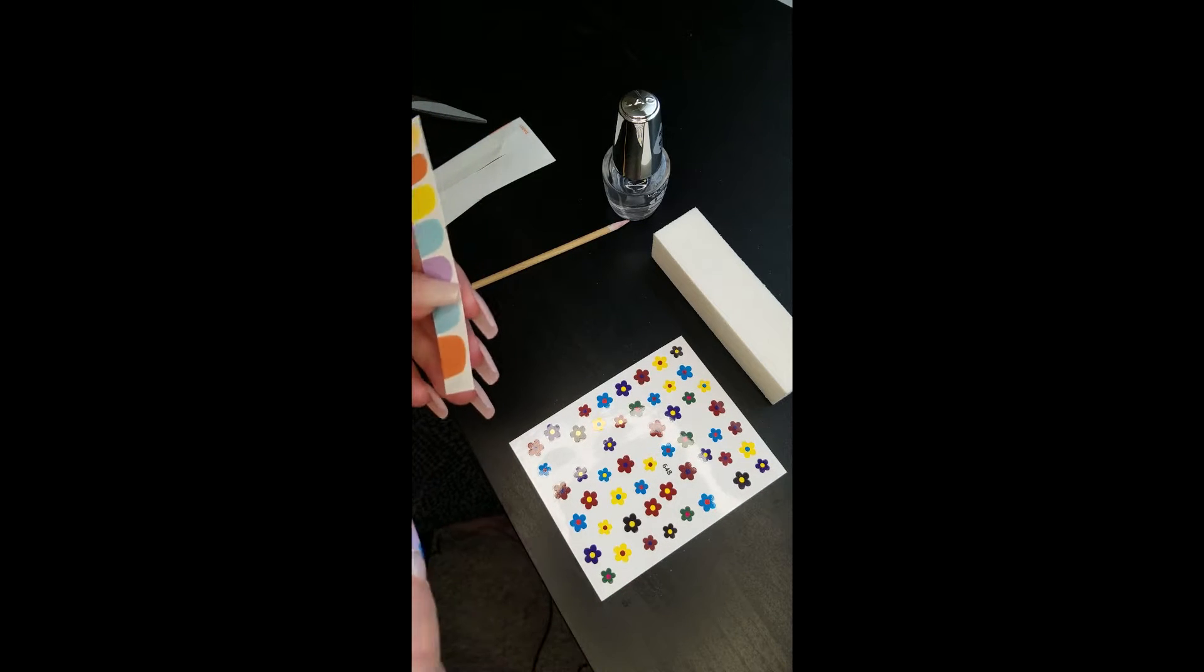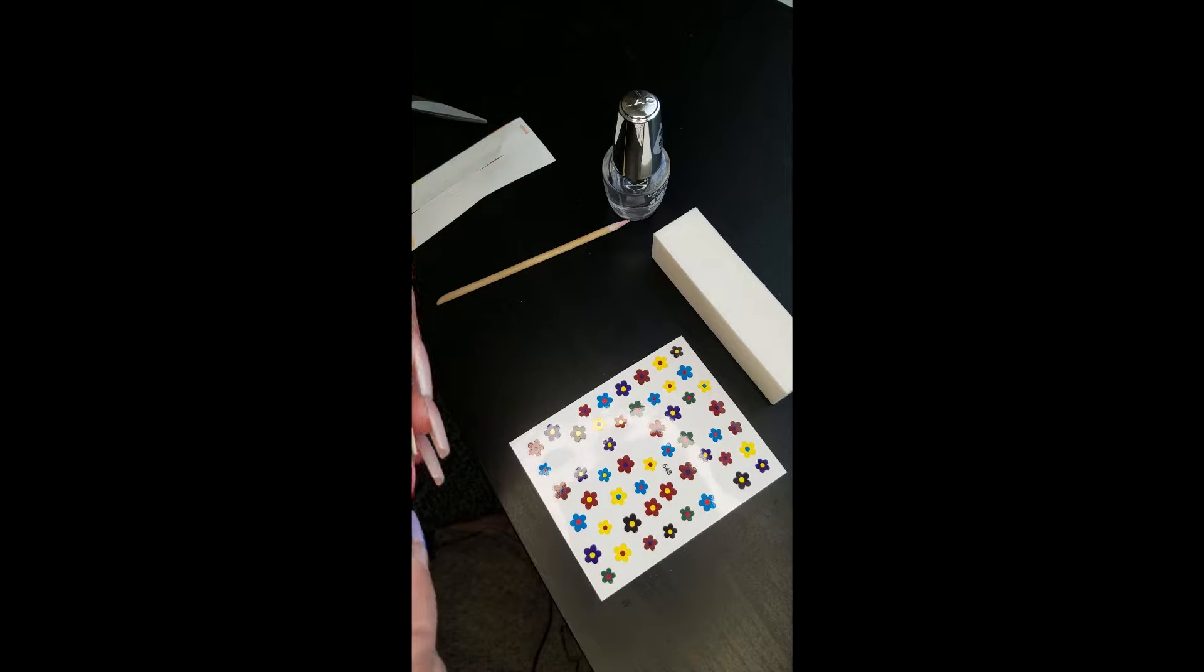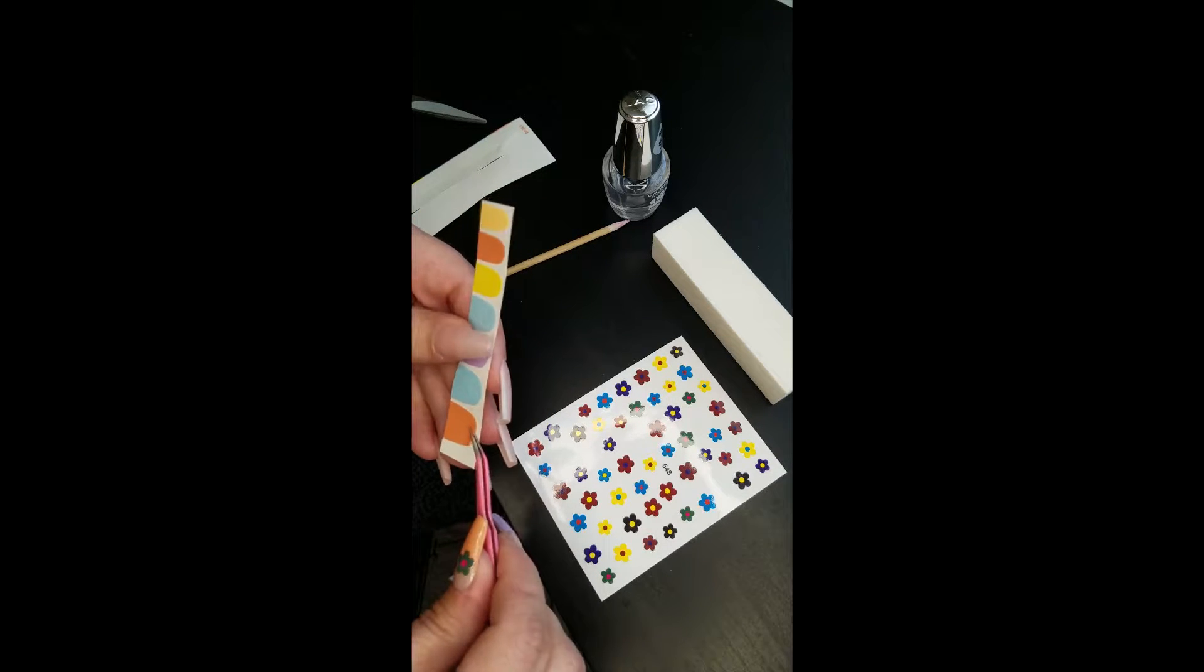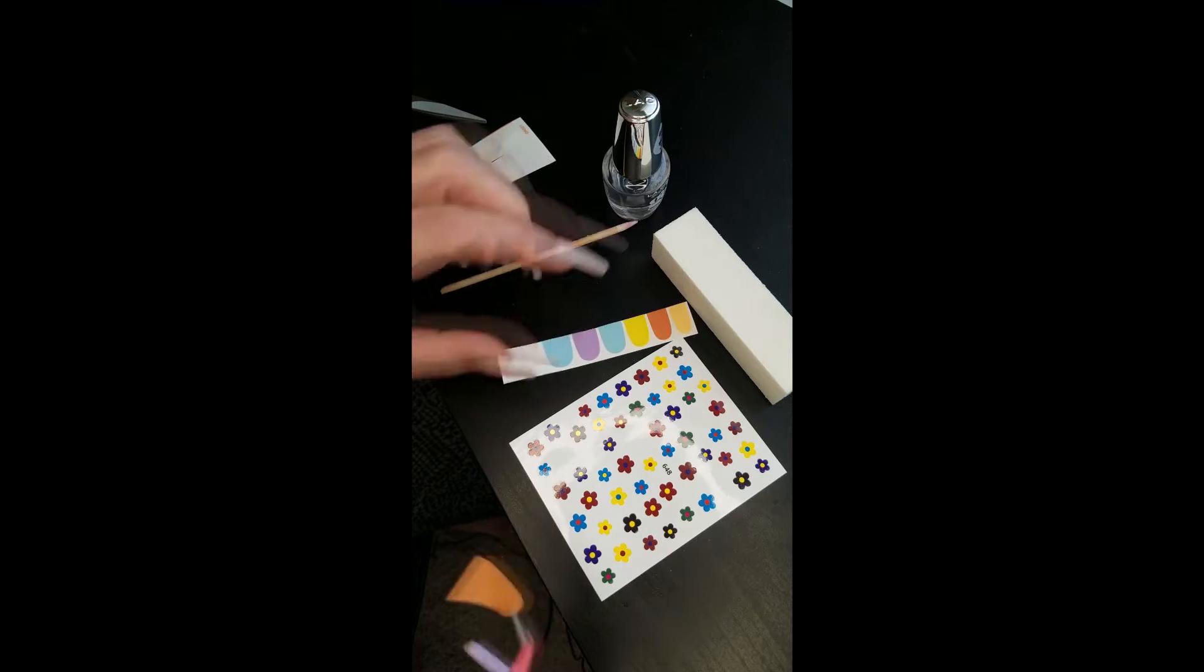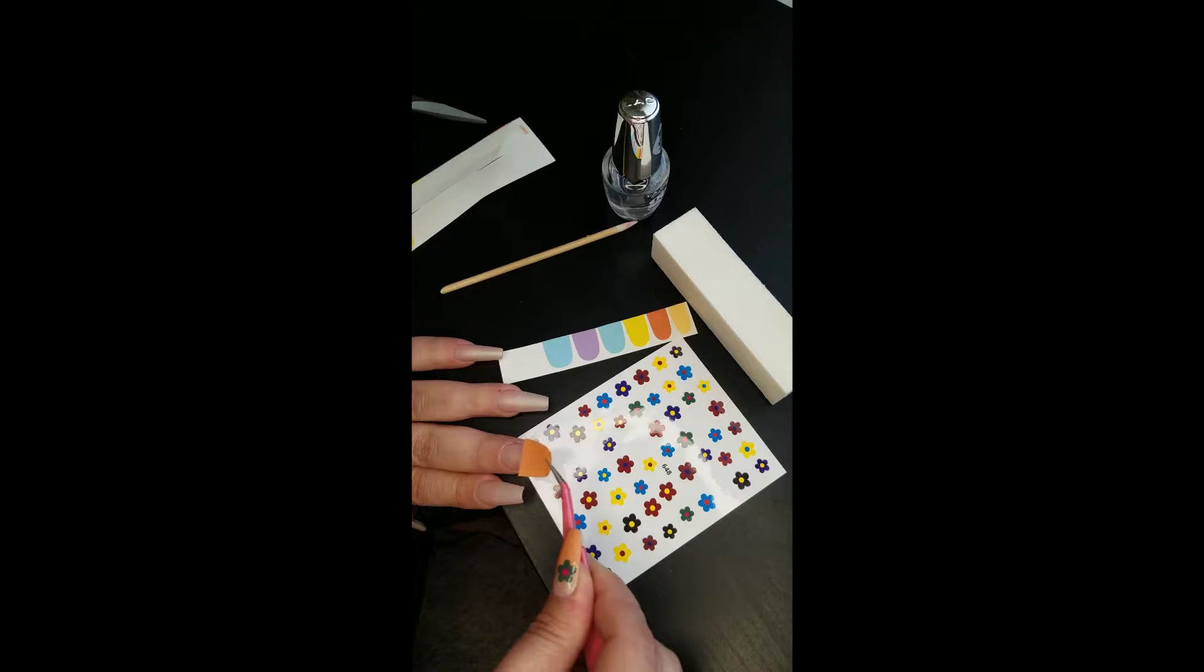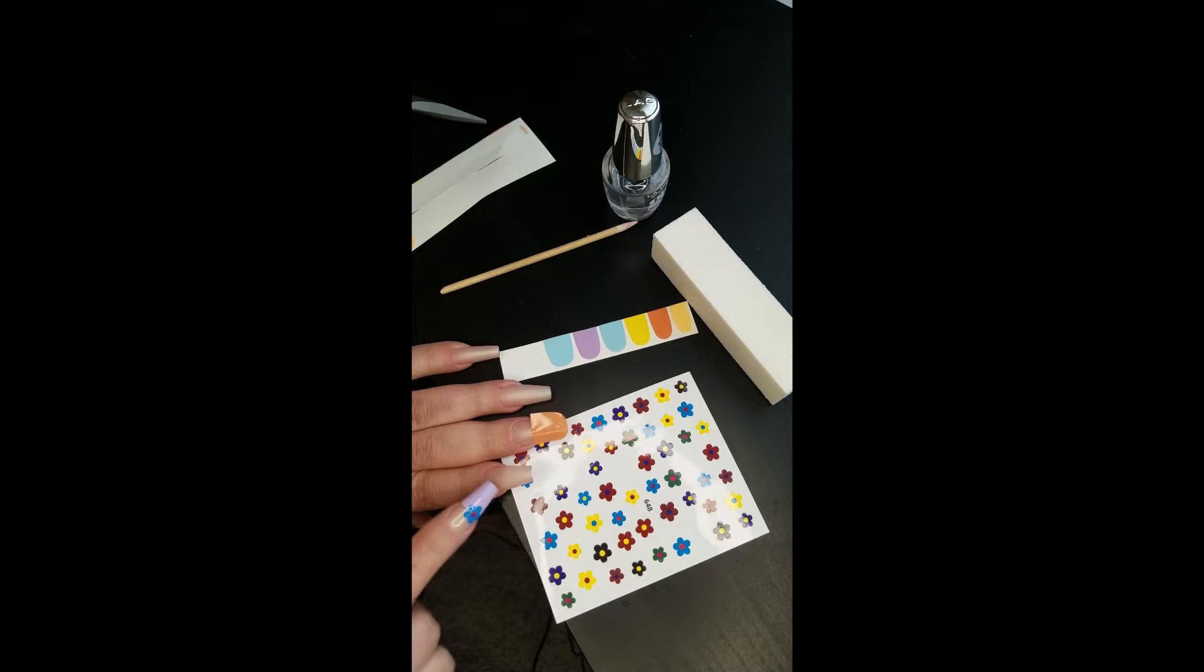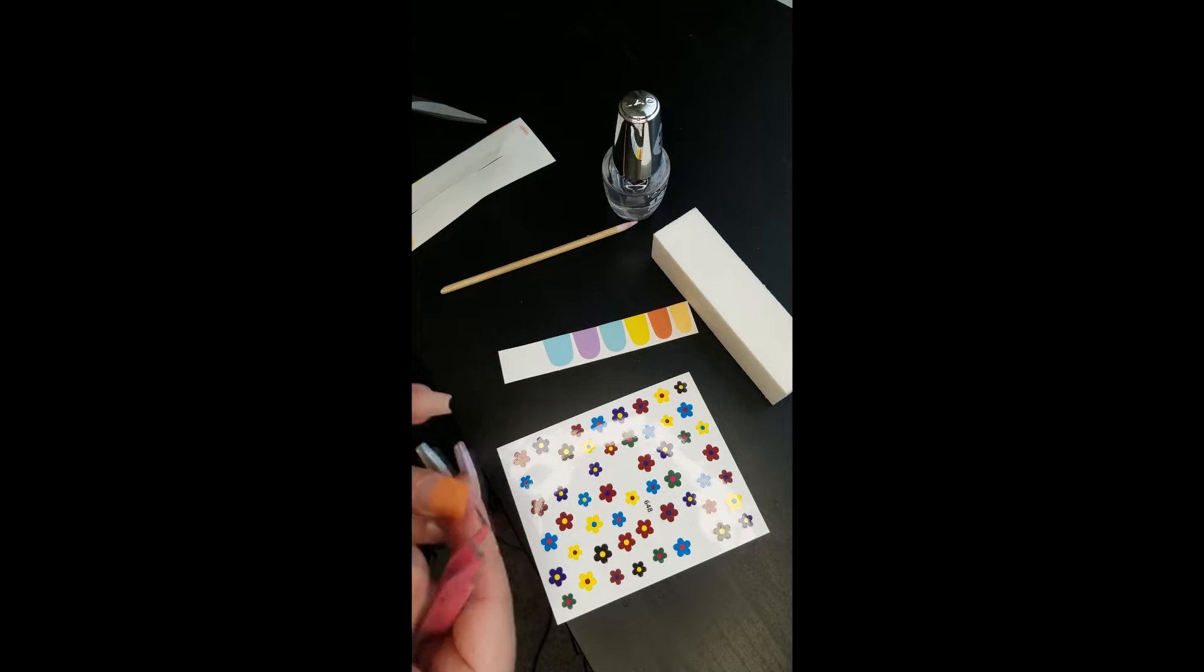Take my tweezers - you can use regular tweezers, I just happen to have these specialty tweezers for stickers because I do them a lot - and just go ahead and decide which nail. I'm doing it just under my smile line, because since I have a neutral you can kind of see where my natural smile line would be.